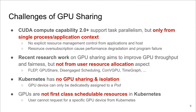However, enabling GPU sharing has many challenges. CUDA provides time-sharing on GPU, but only from a single process or application context. Recent research work on GPU sharing aims to improve GPU throughput and fairness, but not from a user resource allocation aspect. More importantly, Kubernetes lacks support to provide GPU sharing and isolation in its resource management, nor does it treat GPU as first-class schedulable resources.